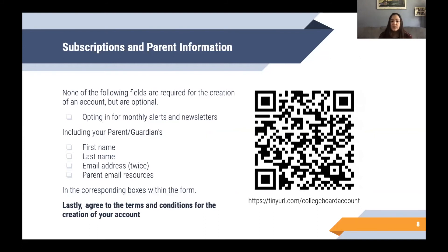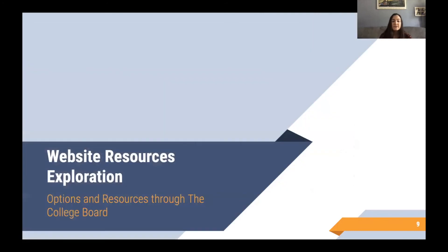Lastly, you have the option of additional monthly alerts and newsletters by email. You can also include your parent or guardian's first and last name as well as their email address so that they may also receive resources. To complete the form, you will need to agree to the terms and conditions for the creation of your account.